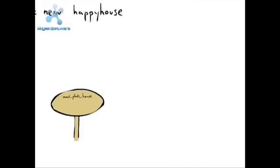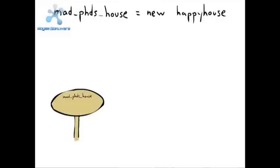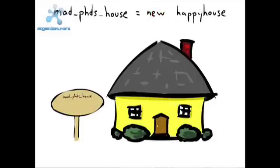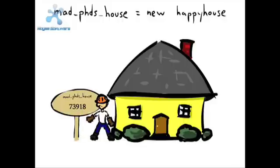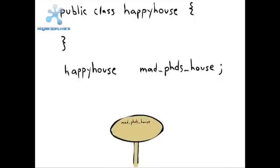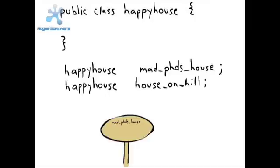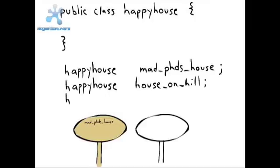Then, when an instance of an object is created using new, the address where the object is located in memory is returned. This address will be assigned to the reference variable — in this case, MadDoctor'sHouse. Likewise, for each object that will be created, a reference variable will be declared to hold its address.